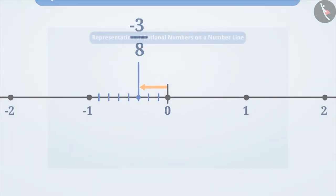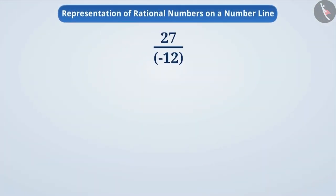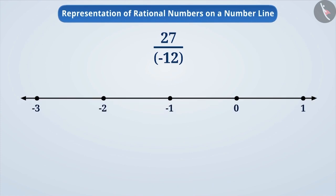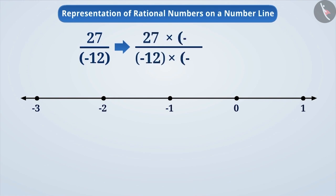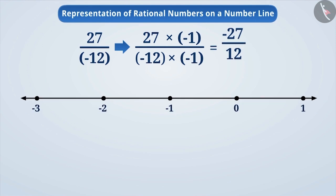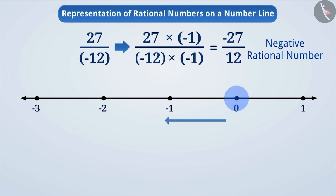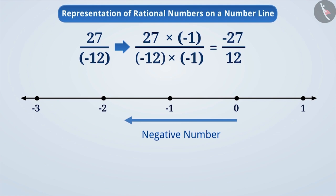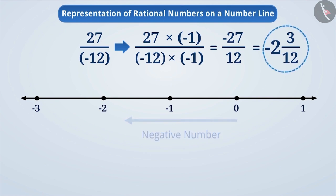Let us understand this with another example. Suppose we have to represent 27 by minus 12 on the number line. The denominator of this rational number is not a positive integer. So, first we will multiply both its numerator and denominator by minus 1 and convert it into a rational number with equal value whose denominator will be a positive integer. On doing so, we will get the rational number minus 27 by 12. Since minus 27 by 12 is a negative rational number, its position will be to the left of 0. We will express minus 27 by 12 in mixed form as minus 2 and 3 by 12. Can you guess the position of minus 2 and 3 by 12 on the number line?